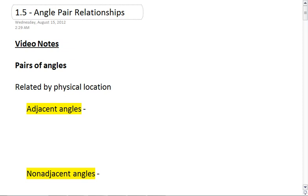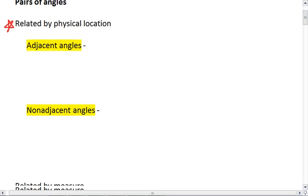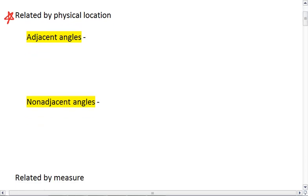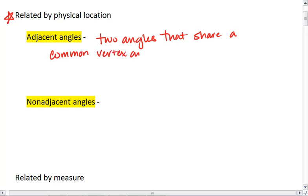We can have pairs of angles that are related by their physical location. Our first example is adjacent angles, and these are two angles